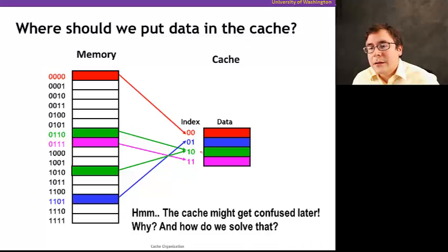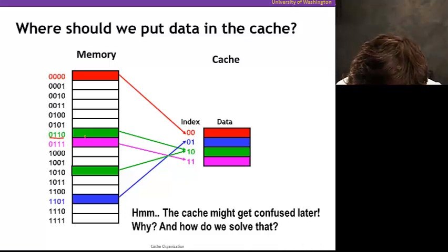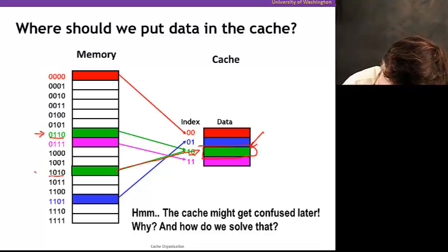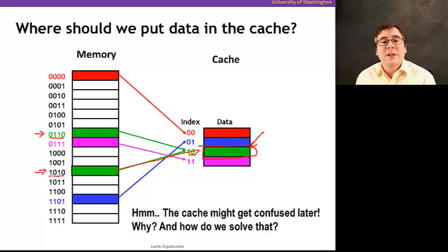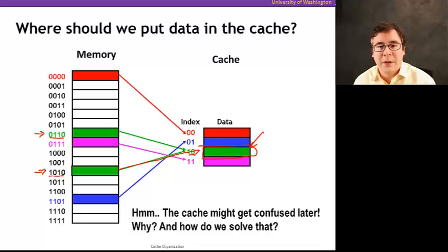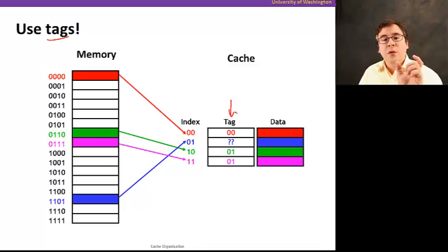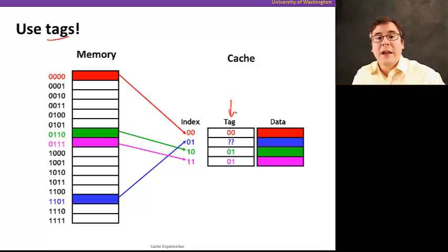Now, once you put the data there, suppose this address here — based on the lower two bits — goes to a certain cache location, but another address also goes to the same location. How does the processor know that the data there contains either one or the other? Some more information has to be stored alongside the data in the cache in order to tell which block of memory is stored there. We lost some information in this mapping, so it has to be stored somewhere.